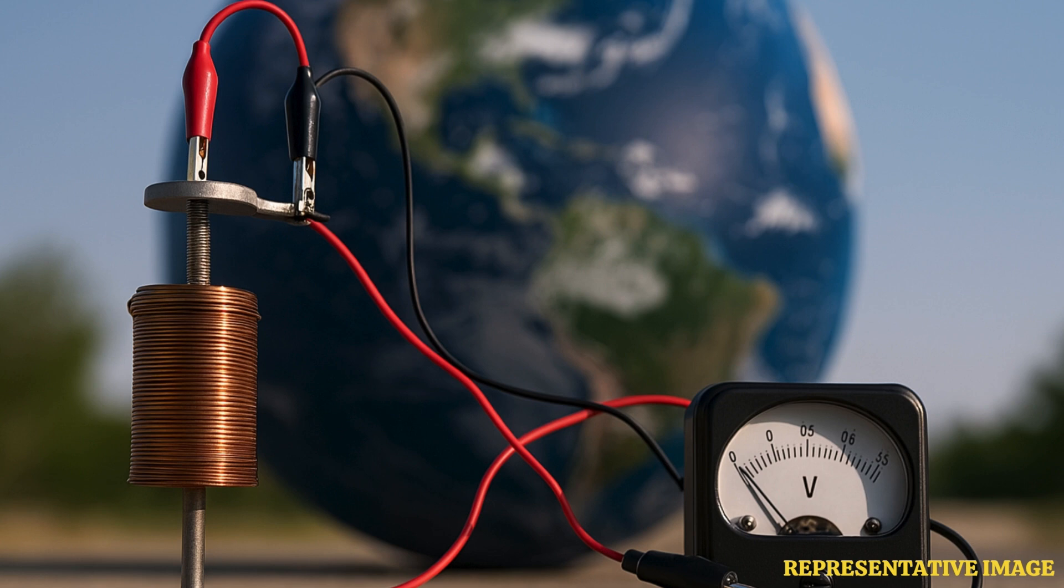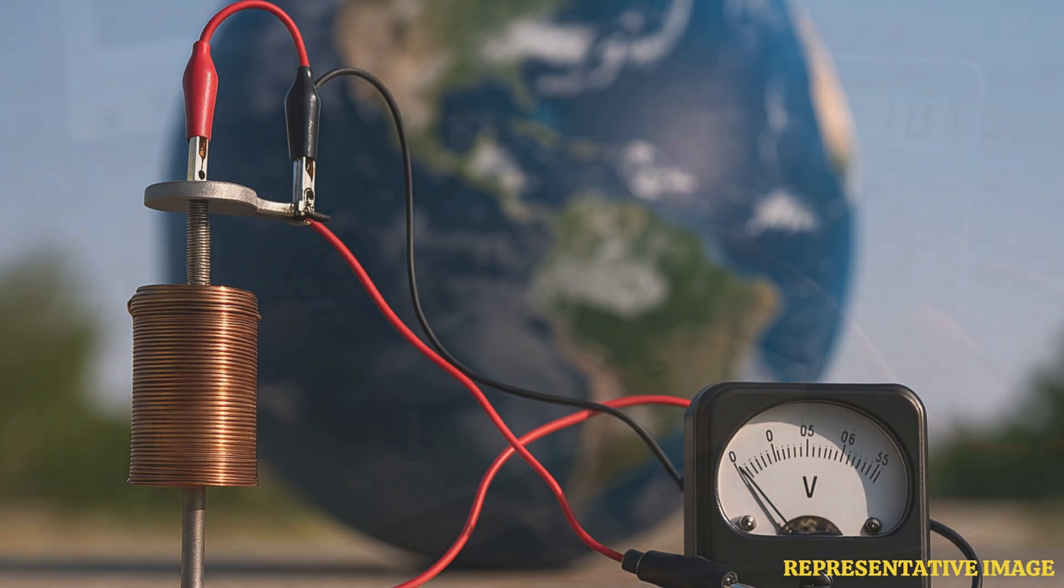Theoretically, if you were to put a conductor on Earth's surface, it would move through some portion of the field, causing electrons to move and generating power, the paper states.